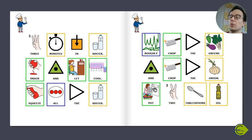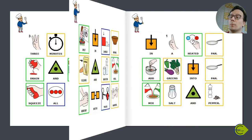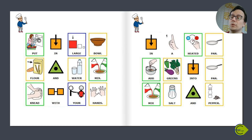Squeeze all the water, roughly chop the greens and chop the onion. Put two tablespoons of oil in a pan.